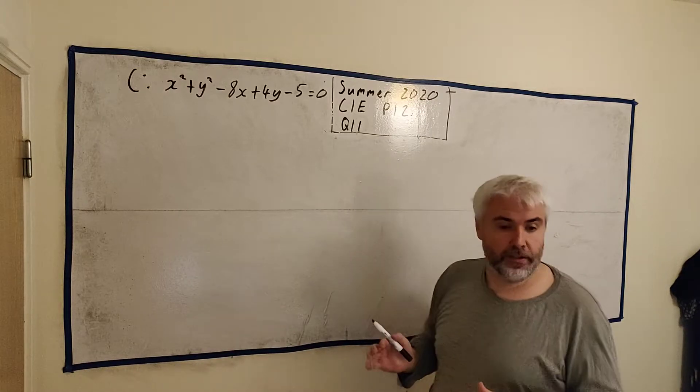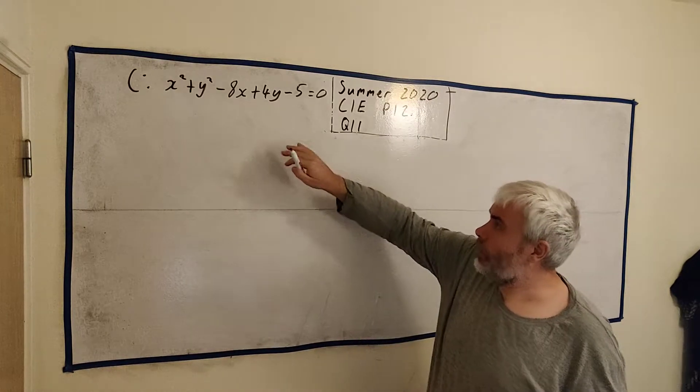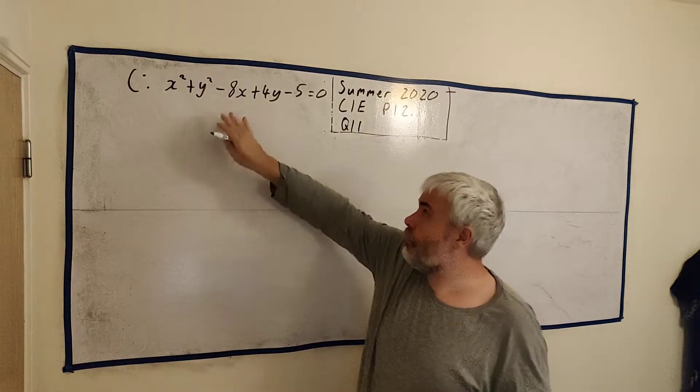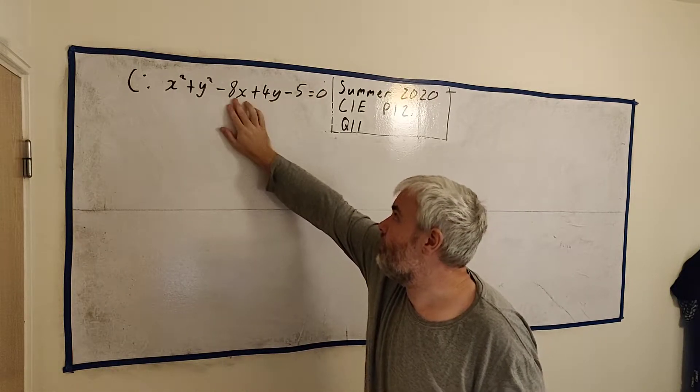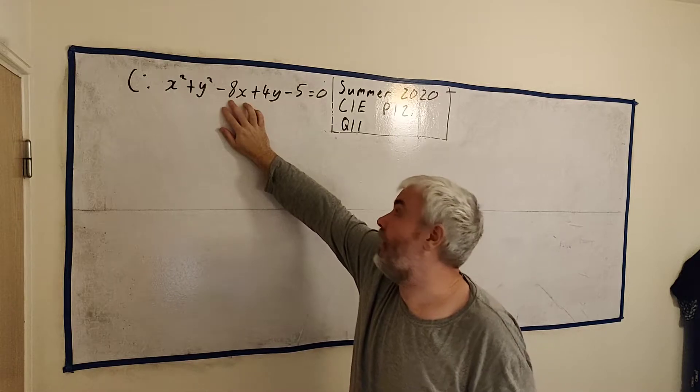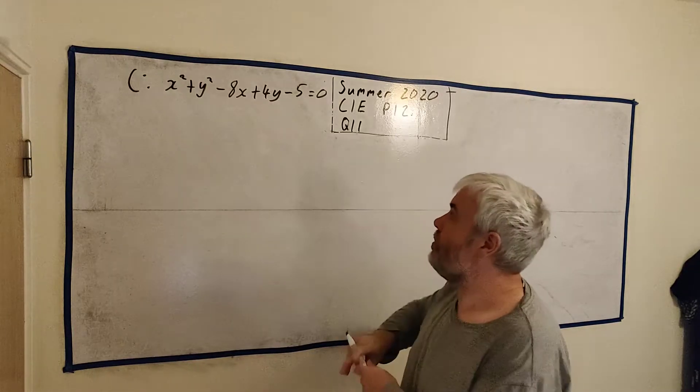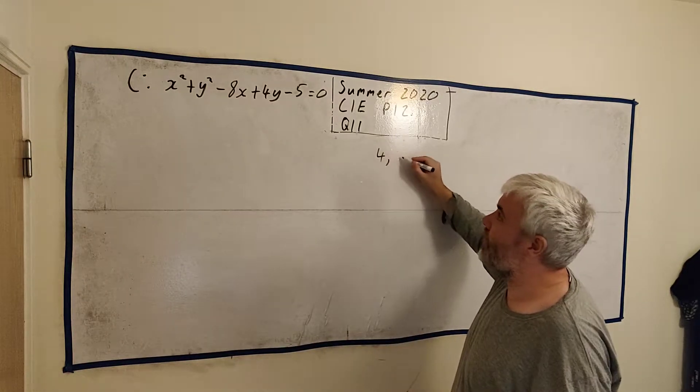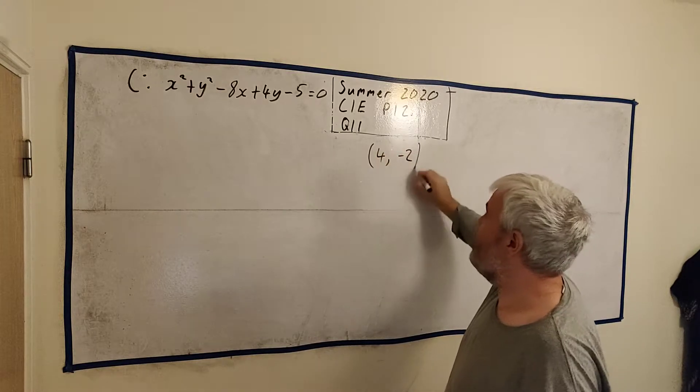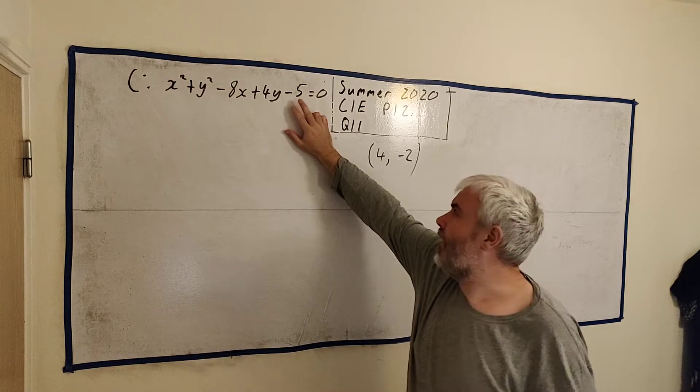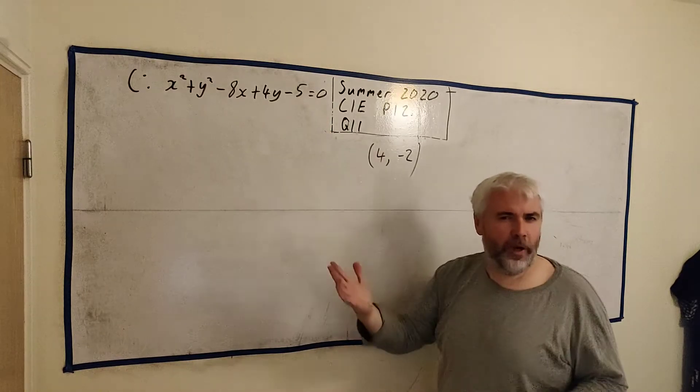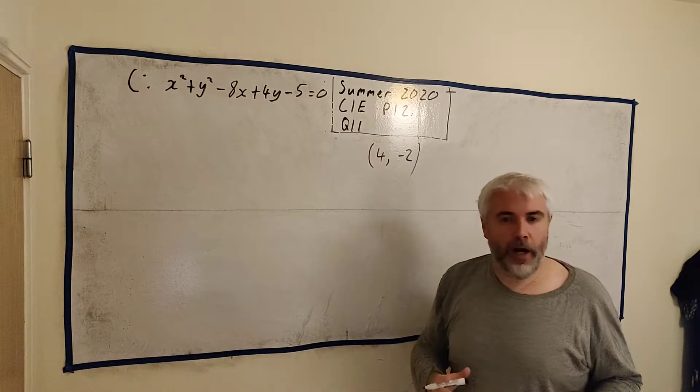We have two formulas for circles. One of them looks like this and just from this we're able to read the center of the circle. Half of this number and change the sign, half of this number and change the sign. So I already know the center of this circle is here. It's a little more complicated but I'll show you another way to do that. I think it's a more common way to do it.